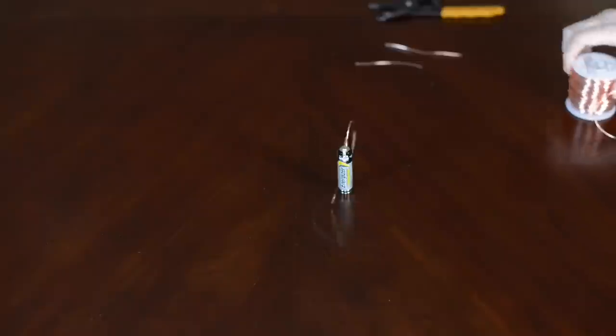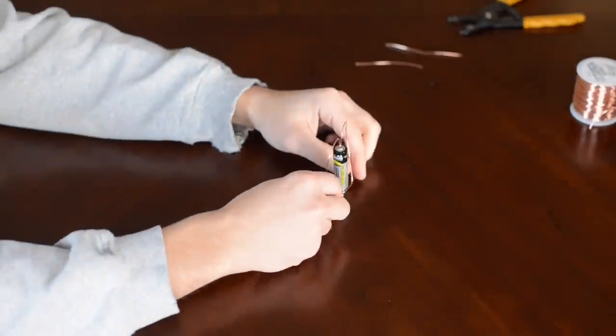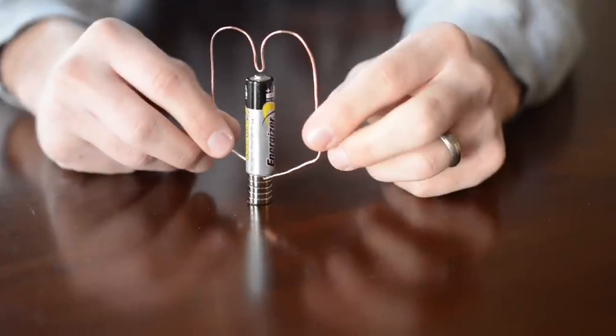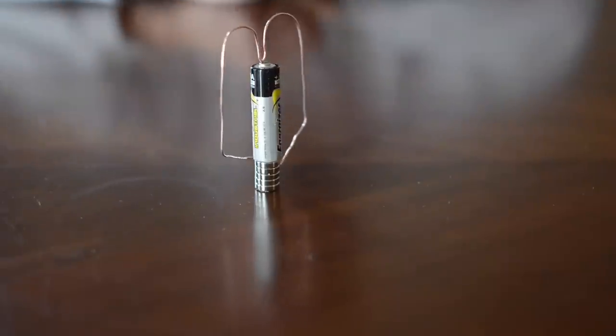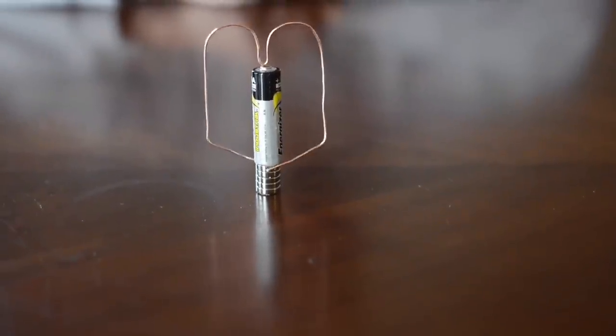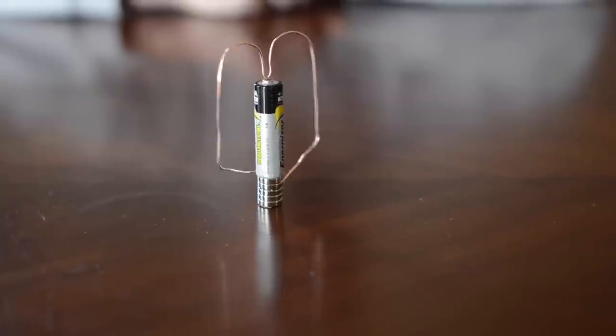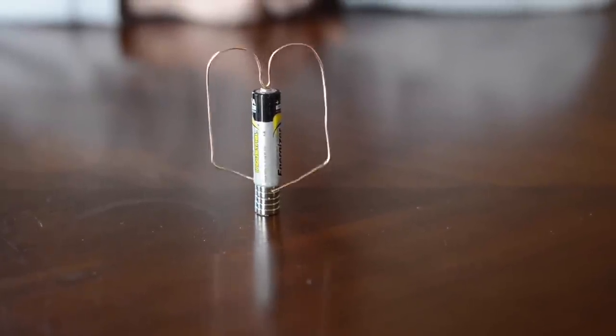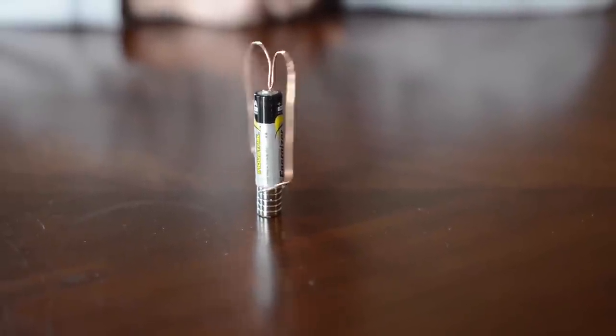So this is demonstrating something called the Lorentz force. This is the force that is generated when electricity moves through a magnetic field. So our copper wire is conducting electricity from one end of the battery to the other. As it moves through the magnet on the negative side of the battery, it creates a force which causes the wire to spin.